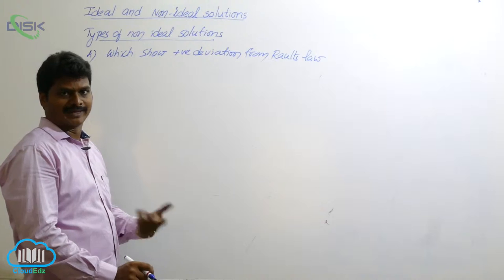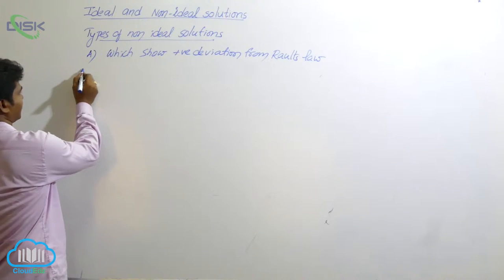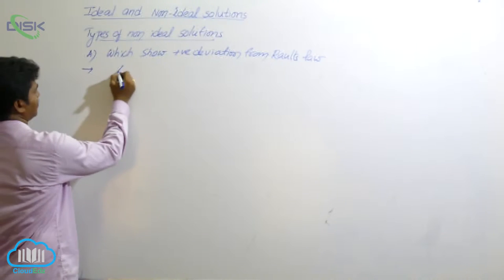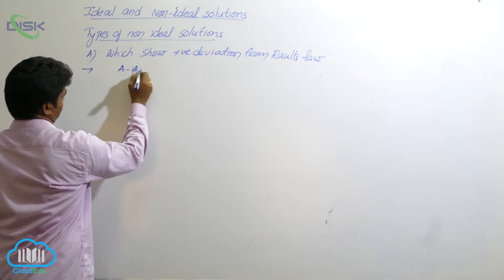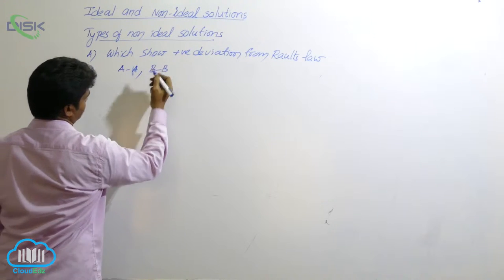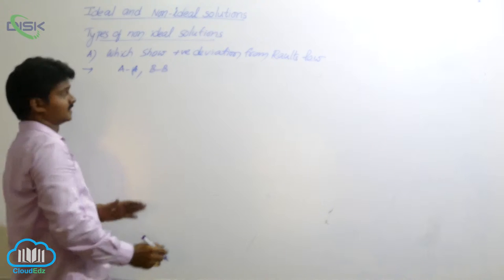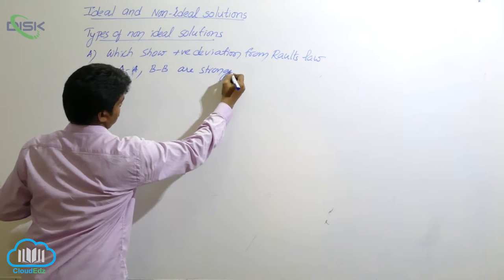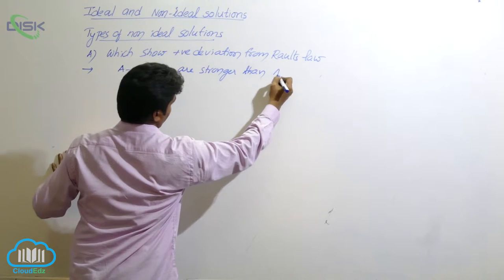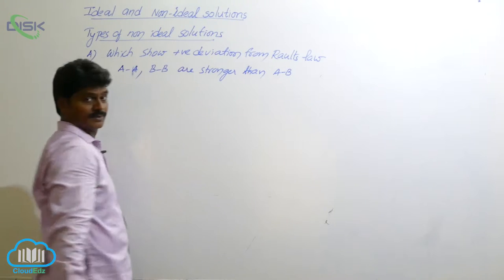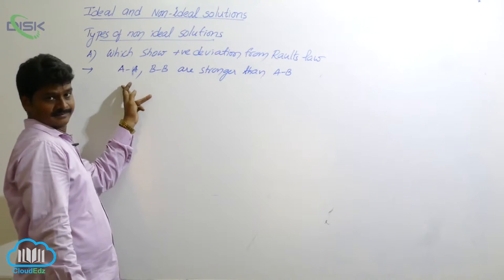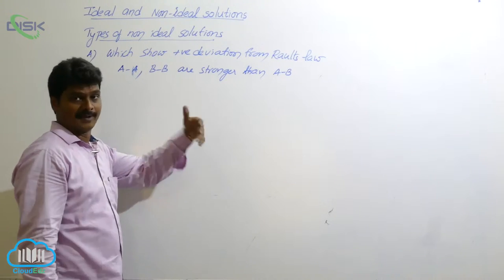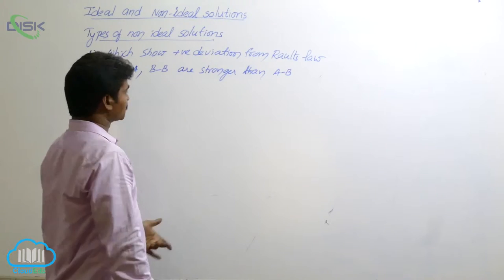The key points about this positive deviation: AA interactions and BB interactions are stronger than AB interactions. That means AA bonds and BB bonds are stronger than AB bonds, while AB bonds are weaker.